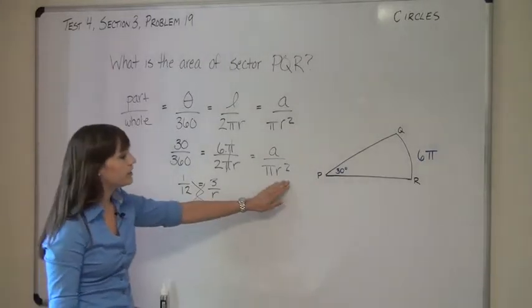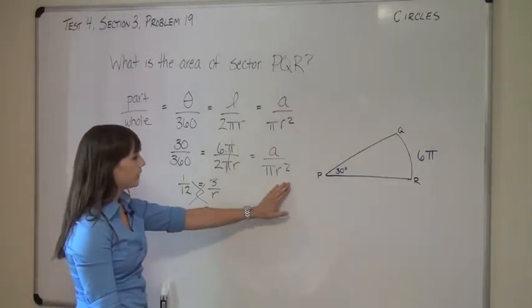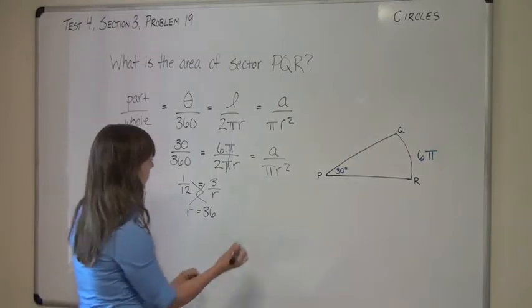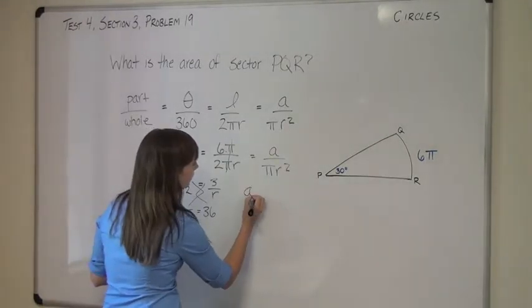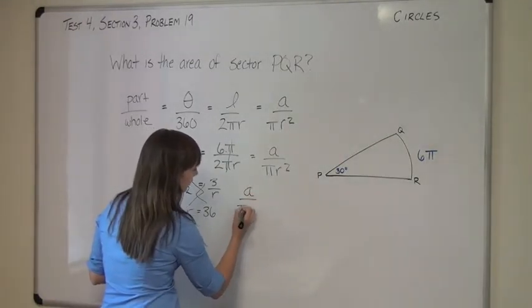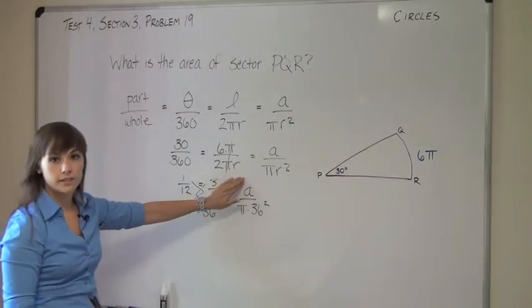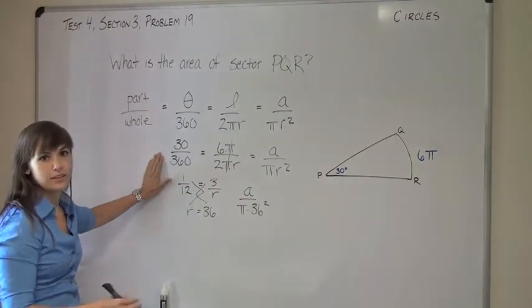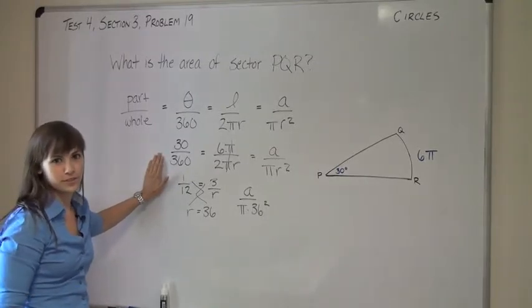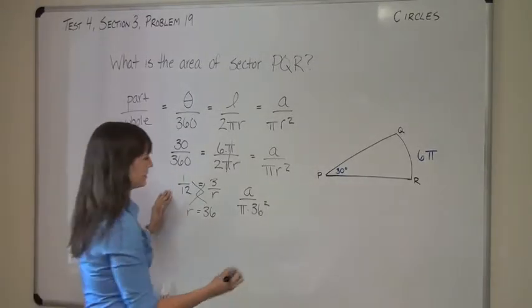Now that we know what R is, we can plug it in here and help us solve for A. So if area over π times 36² is equal to this guy, is equal to this guy, you can set it equal to either of the two to solve for A. I'll pick 1/12, just because it looks easier.